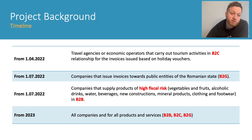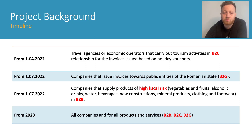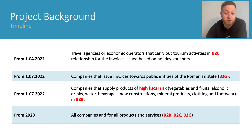Here we have the timeline. From the 1st of April 2022, travel agencies or economic operators that carry out tourism activities — specifically for invoices issued based on holiday vouchers — must comply. From the 1st of July, companies that issue invoices towards public entities of the Romanian state, i.e., B2G, business to government, must also comply. Also from the 1st of July, companies that supply products of high fiscal risk — such as vegetables, fruit, alcoholic drinks, water, beverages, constructions, mineral products, clothing, and footwear in B2B — should already be in the process or have completed their e-invoice projects. From 2023, all companies and all products and services should be within the Romanian e-Factura guidelines.